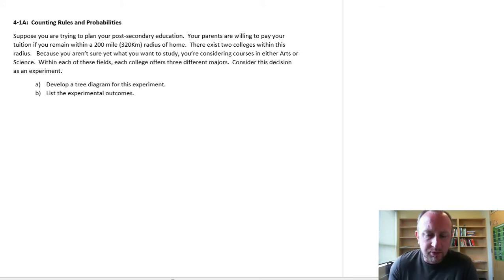So in this exercise, here we have a scenario: mom and dad are willing to pay for tuition if we live within a radius of home. There's two colleges within this radius, but we're not quite sure yet what we want to study. So this is sort of a decision tree, and it's practically identical to something that we can use for assessing outcomes from an experiment.